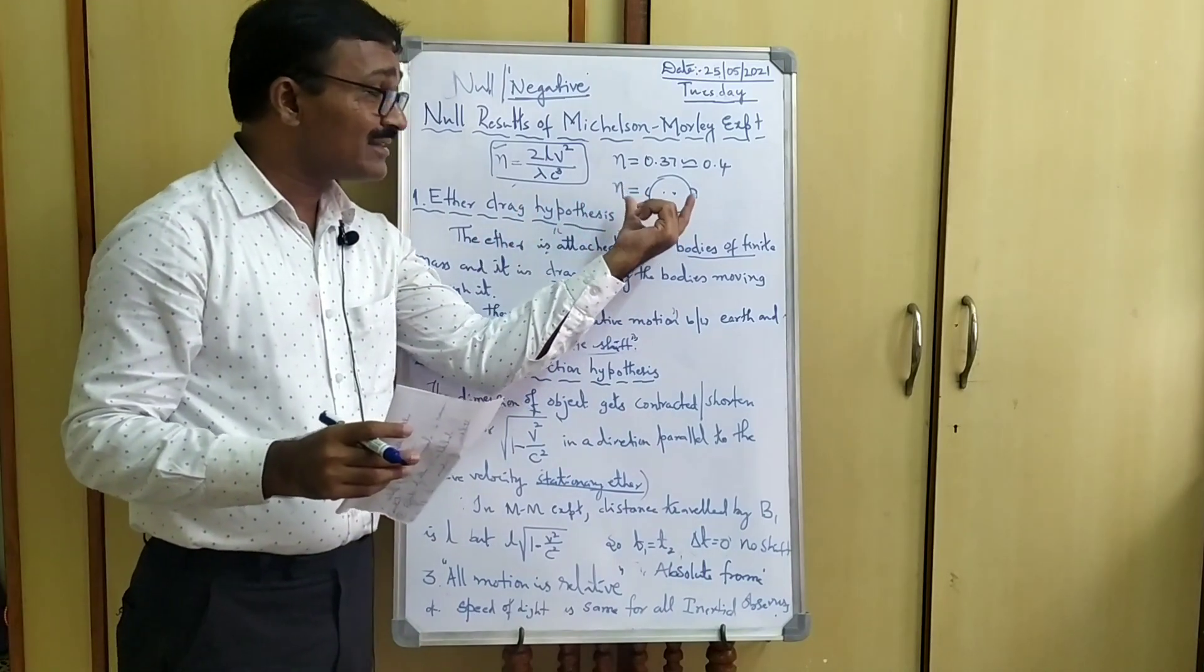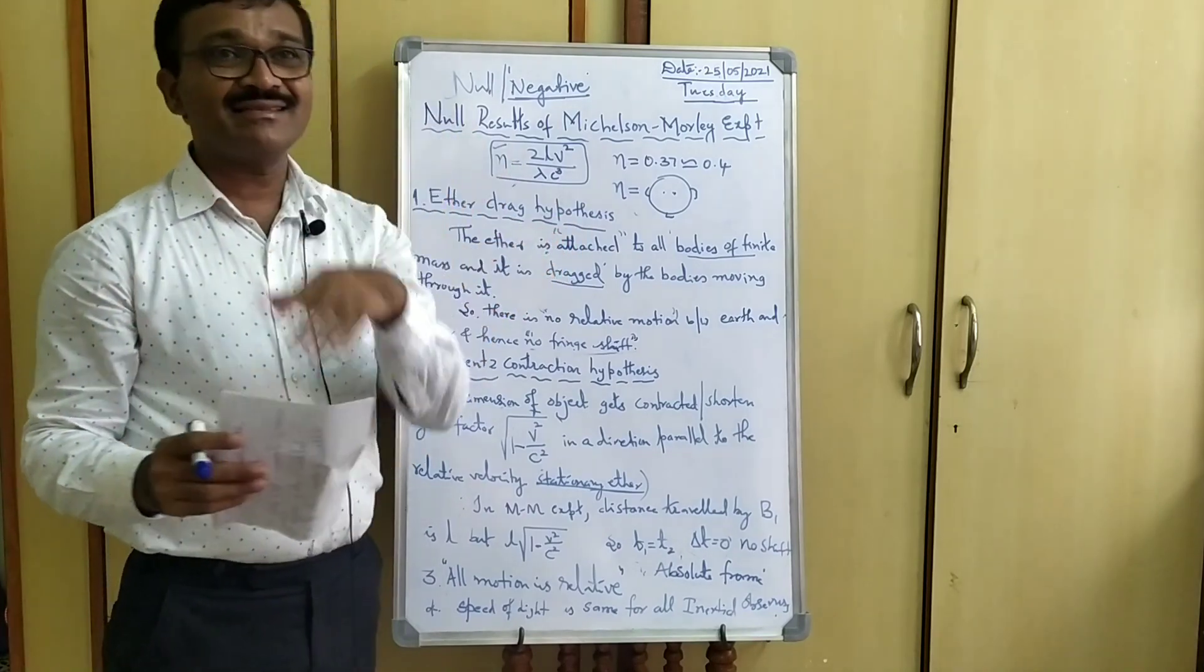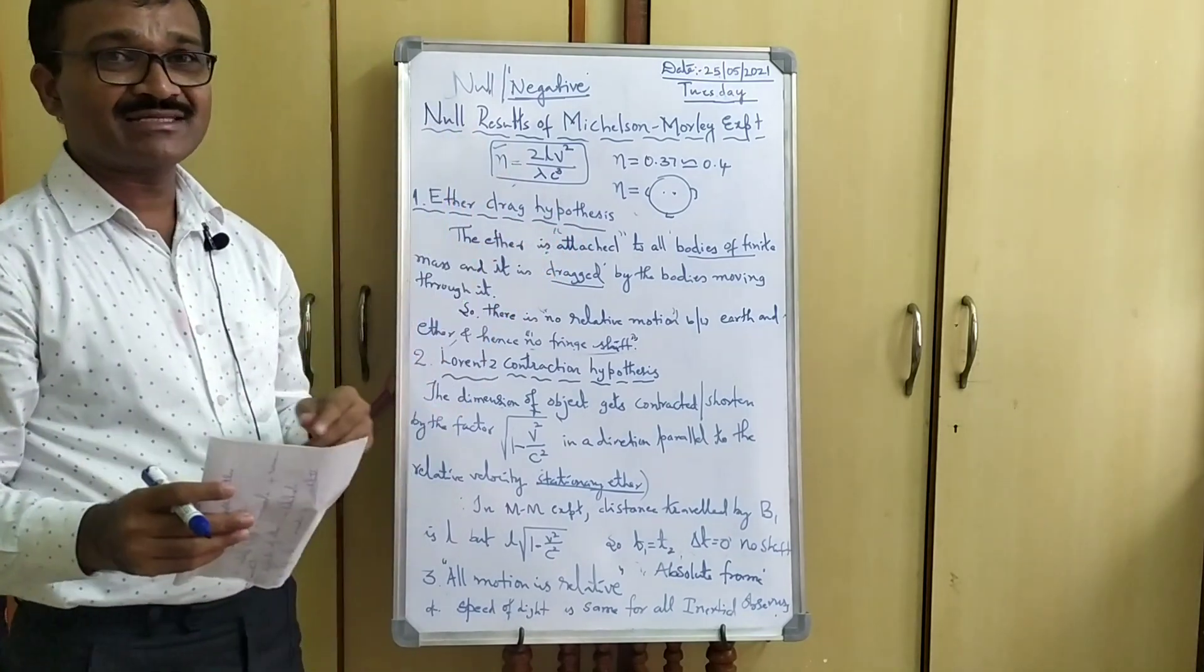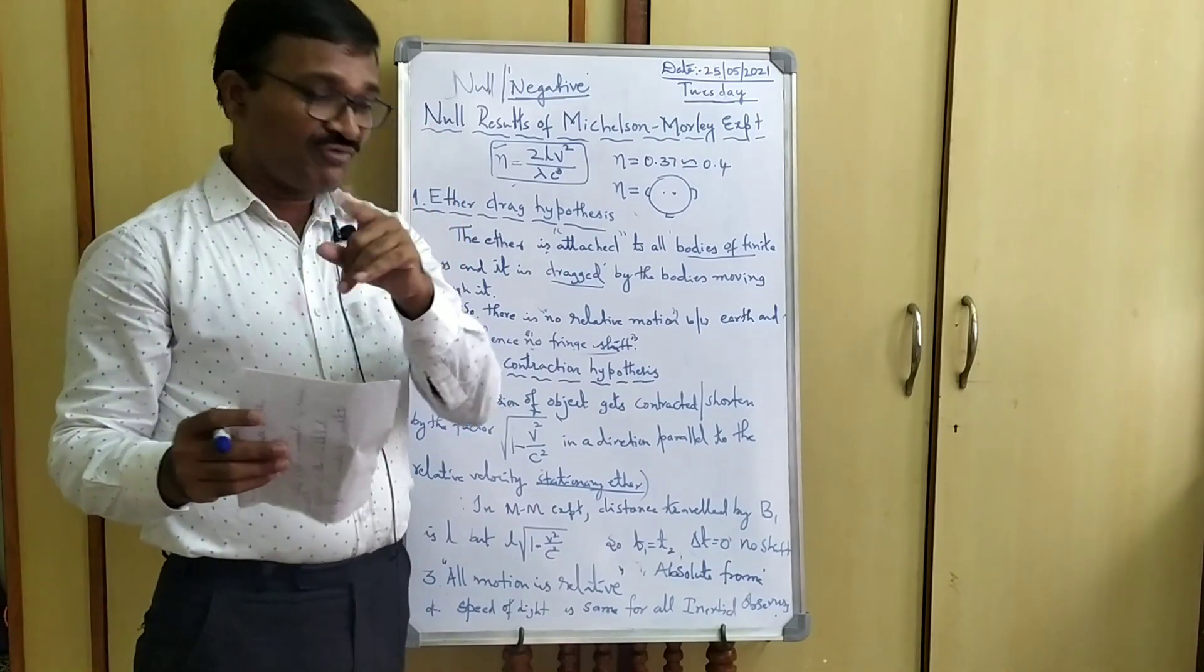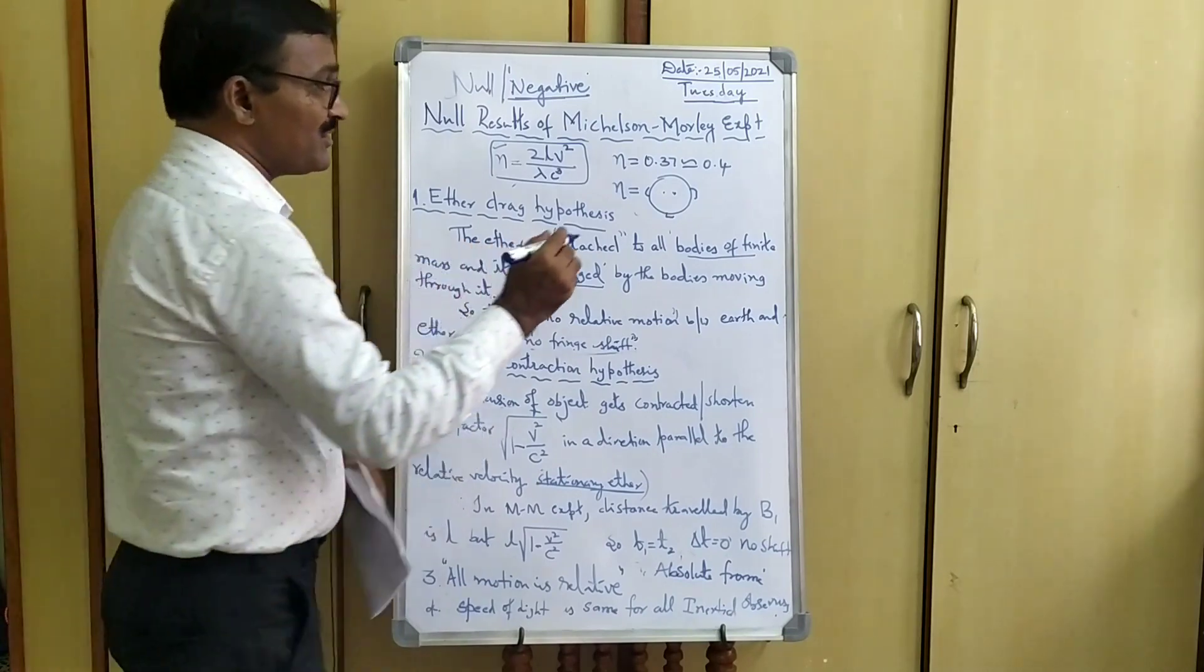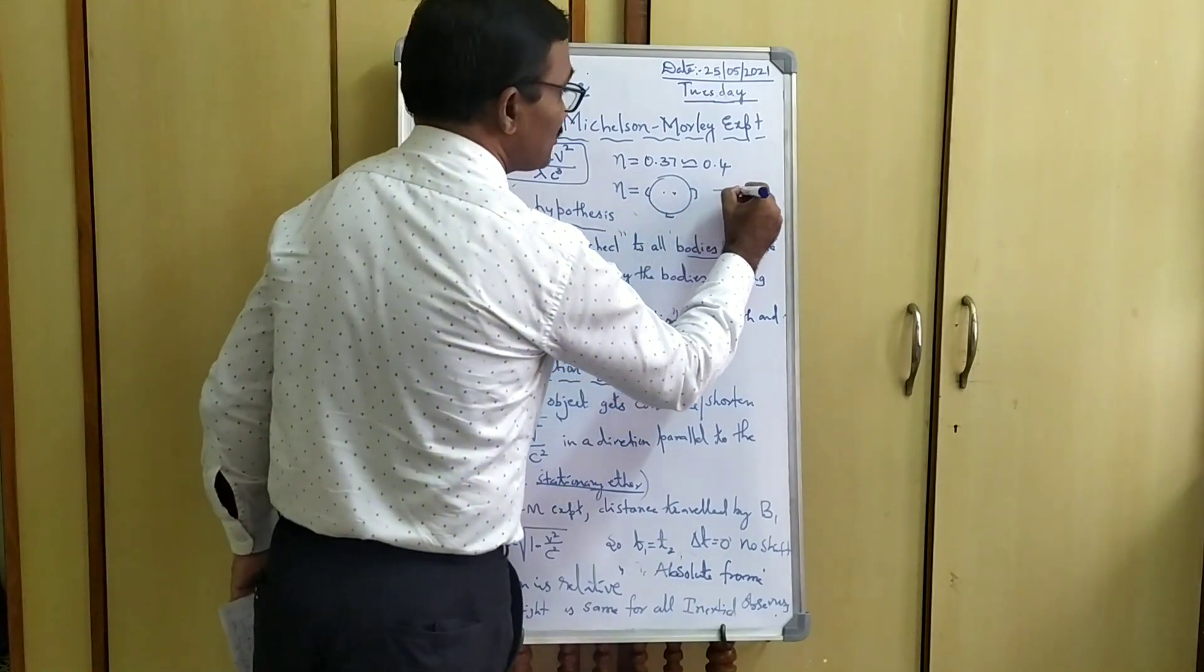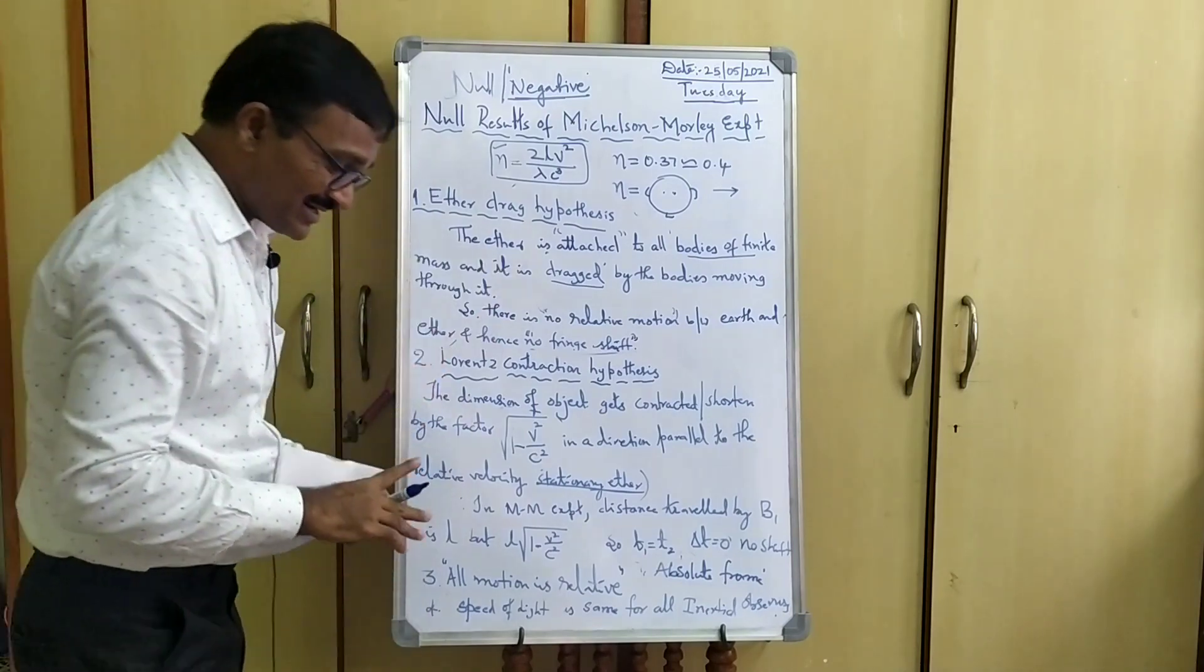Based on this, whenever we get N is equal to zero, based on this, they suggested that by the null results of Michelson-Morley Experiment, we are impossible to find the velocity of the earth through the stationary ether by the null results.